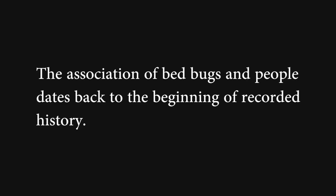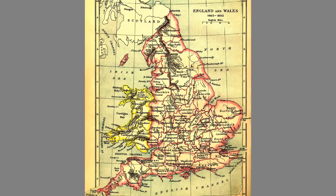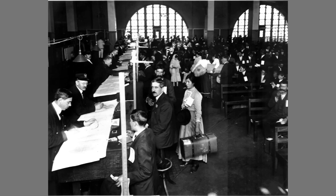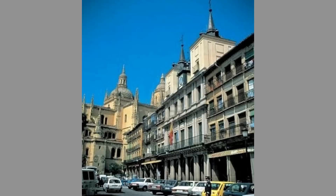Bedbug infestations occur worldwide, and the association of bedbugs and people dates back to the beginning of recorded history. They were a common pest in England from the 17th century until the late 1940s, and had also become a common problem in North America by the mid-1800s, largely through immigration and international trade. As central heating became common in buildings by the early 1900s, bedbug infestations became more common and an estimated one-third of dwellings in major cities in Europe had become infested.